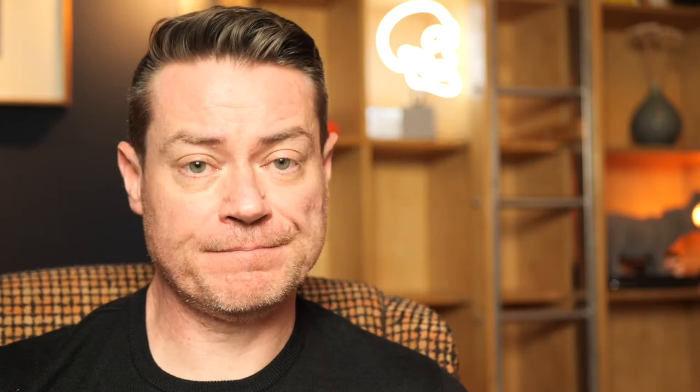When the first layer is finished, the build plate rises and the next layer is printed. The final object is created layer by layer. Some examples of the types of printlets we make with SLA printing are shown on the screen. They are drug-loaded with either paracetamol or 4-ASA.